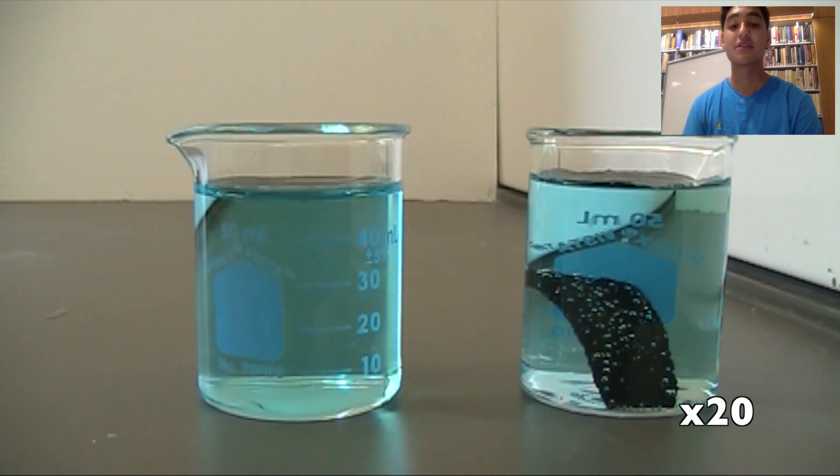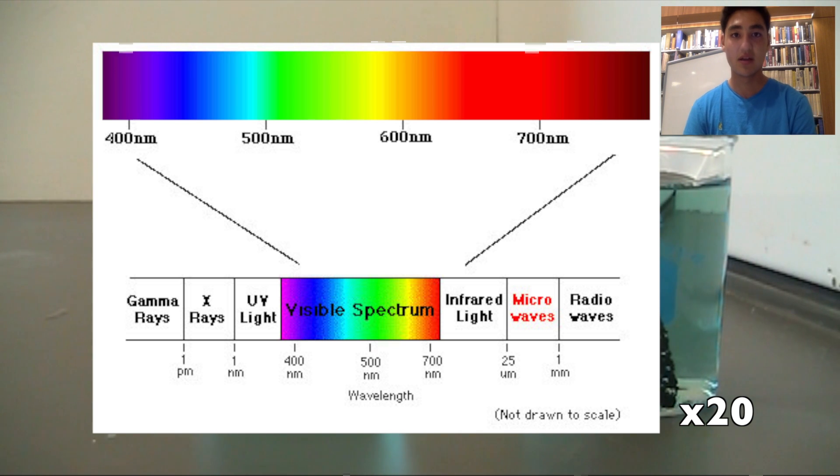The original solution of copper sulfate has a color of light cyan, as it absorbs wavelengths of light in the red spectrum, photons of approximately 500 to 700 nanometers.